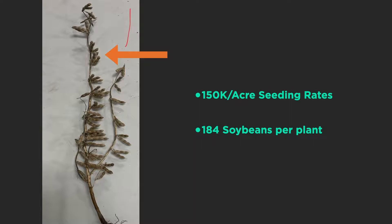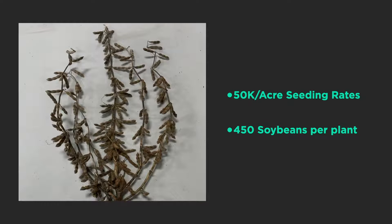I want to lower the populations and tell a soybean plant, 'hey, we've got a little bit of room — offer some lateral branching.' Look what happens when we go to 50,000 seeding rates: it's almost like a Christmas tree. In the lower third of the plant we get these lateral branches coming out, and they've got nodes on those branches, which leads to pods and more beans.